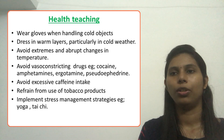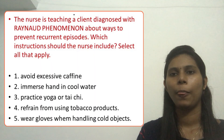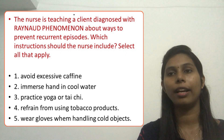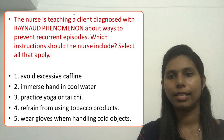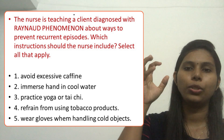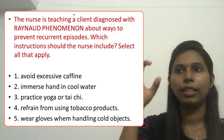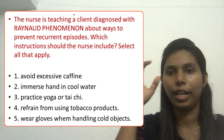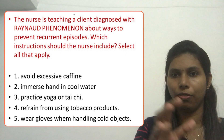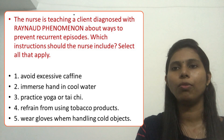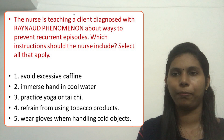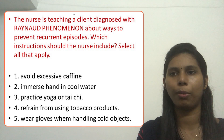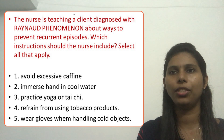Now let's look at a practice question. The nurse is teaching a client diagnosed with Raynaud's phenomenon about ways to prevent recurrent episodes. Which instructions should the nurse include? Select all that apply. Option one says: avoid excessive coffee — yes, that is correct because we said the client should limit intake of caffeine or caffeinated products.